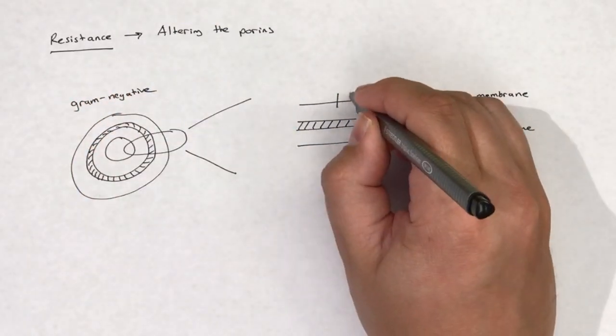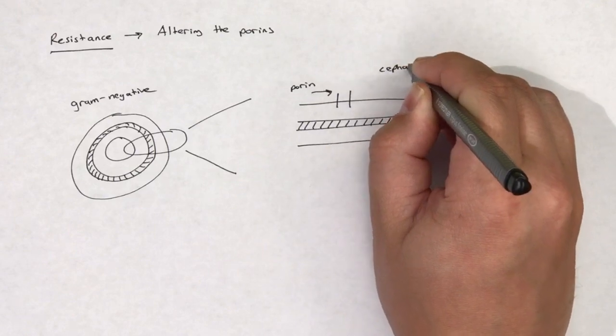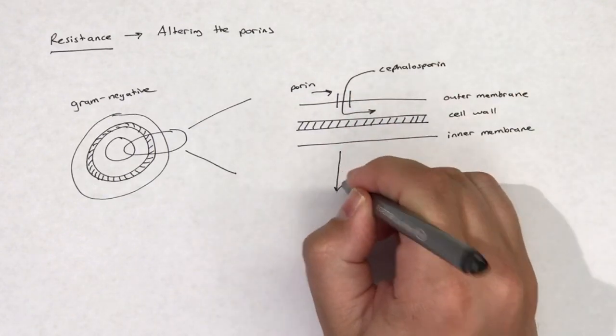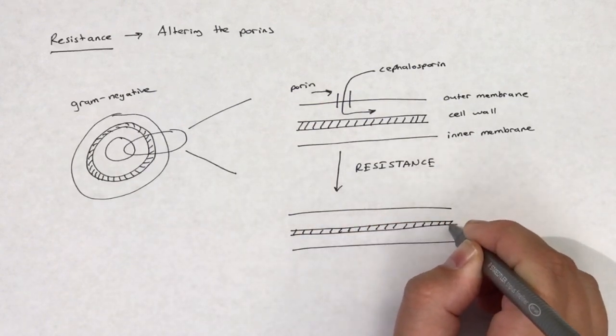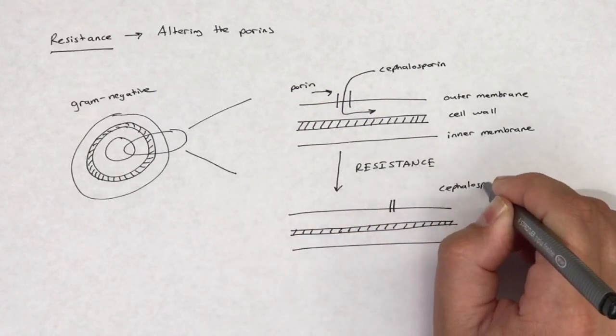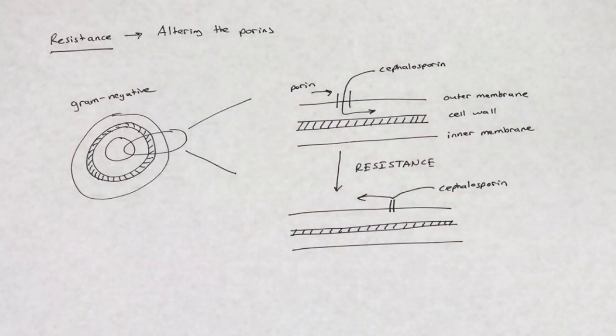Some gram-negative bacteria are able to develop resistance to cephalosporins by altering their porin channels and thus preventing cephalosporins from entering the cell to inhibit cell wall synthesis.